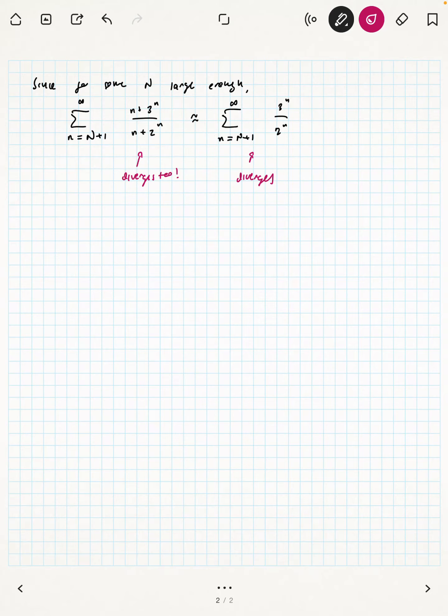And it doesn't matter that we started at some large n, because this is the tail. And so whatever happens to the tail is going to apply also to the beginning of the series. So really, the series is going to diverge. So this series from n equals 1 to infinity of n plus 3 to the n over n plus 2 to the n diverges.